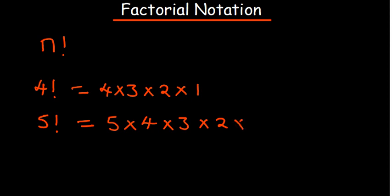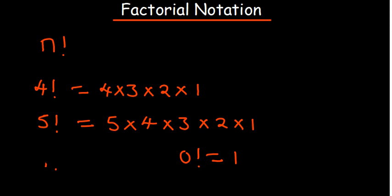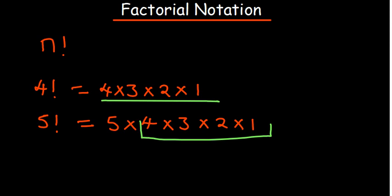One factorial itself is also equal to one, and zero factorial is also equal to one. Now there's something interesting: if you look at five factorial, you can observe that you have four all the way down to one — which is four factorial. So I can express five factorial as five times four factorial.